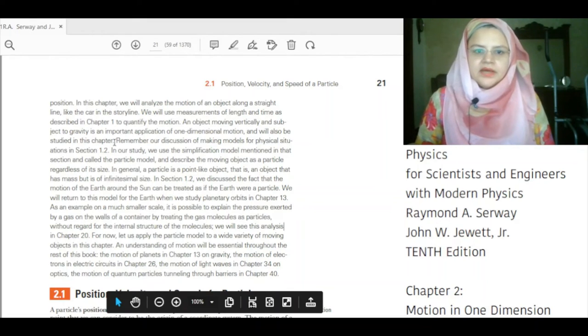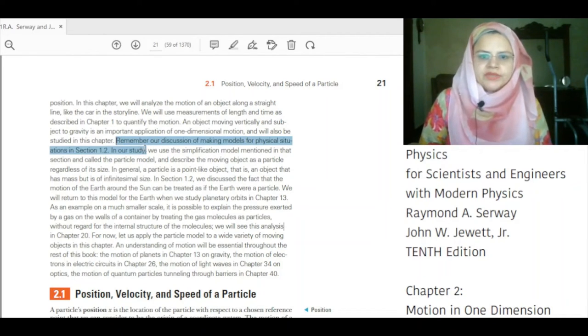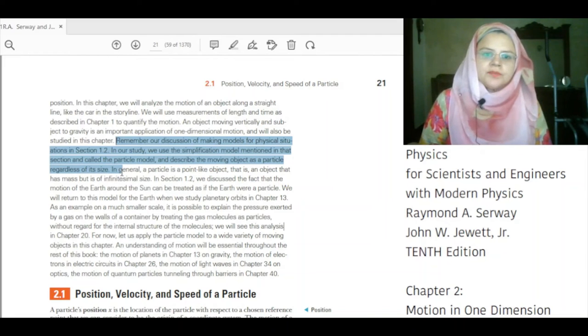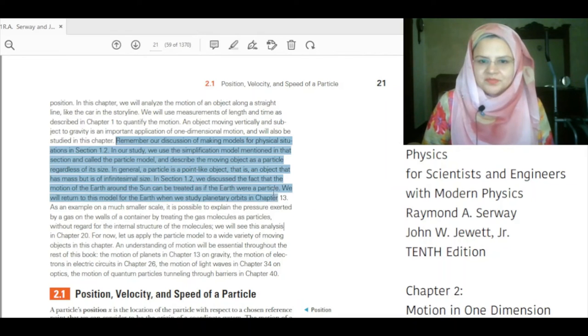Remember our discussion of making models for physical situations in section 1.2. In our study, we use a simplification model mentioned in this section called the particle model and describe the moving object as a particle regardless of its size. In general, a particle is a point-like object that is an object that has mass but is of infinitesimal size. In section 1.2, we discussed the fact that the motion of the earth around the sun can be treated as if earth were a particle.